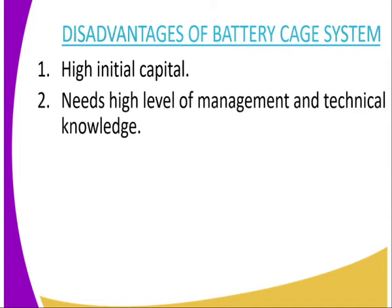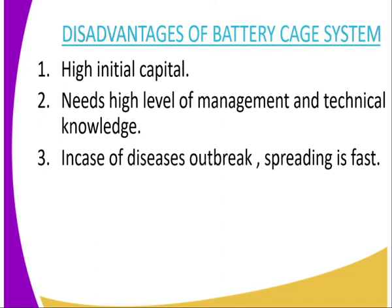Number two, it needs a high level of management and technical knowledge, because there is mechanization of feeding and mechanization of egg collection, and therefore high knowledge and high skills are required when this particular system is to be employed on the farm. Number three, in case of disease outbreak, spreading is very fast because the cages are just adjacent to one another.